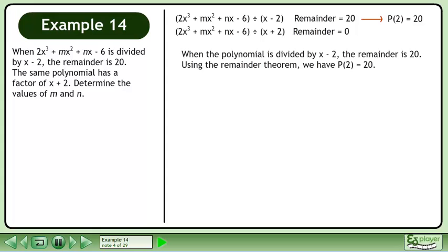When the polynomial is divided by x minus 2, the remainder is 20. Using the remainder theorem, we have P(2) equals 20.